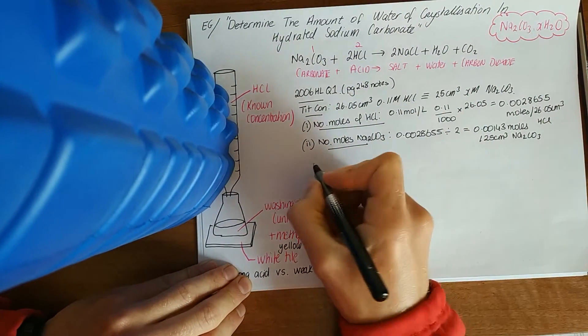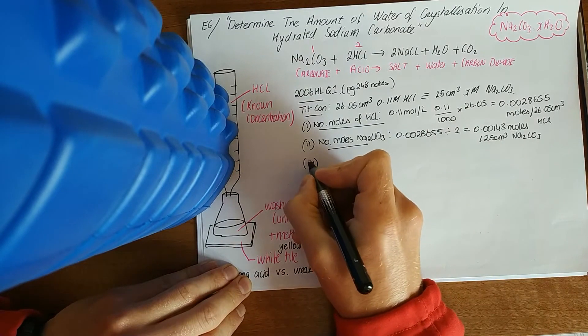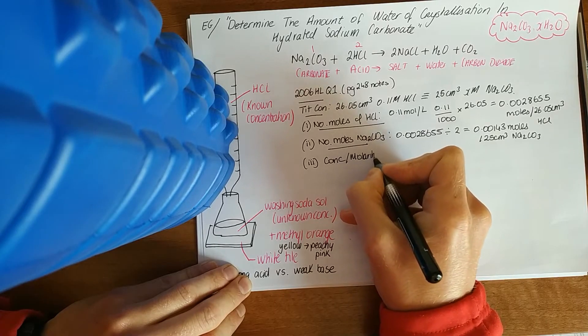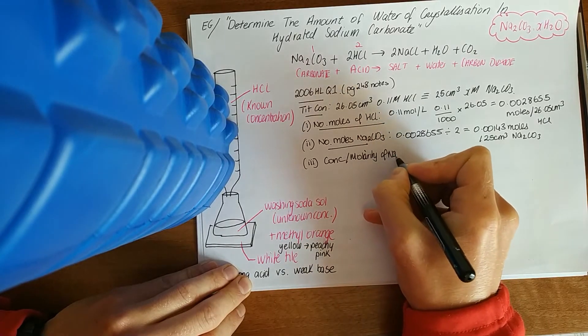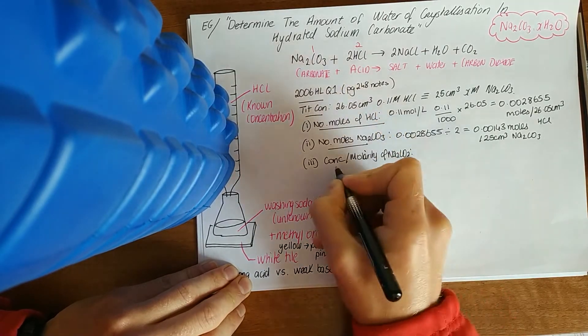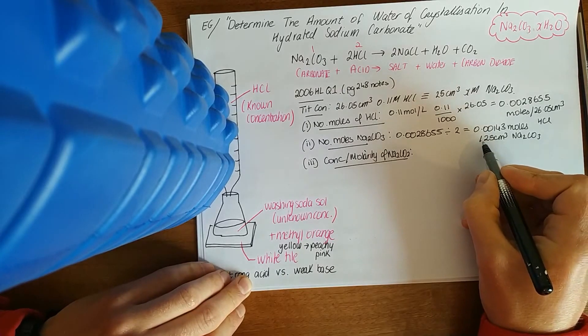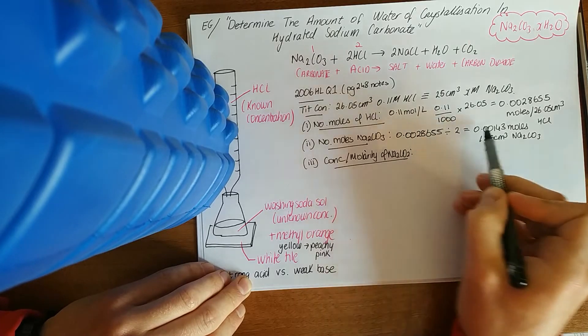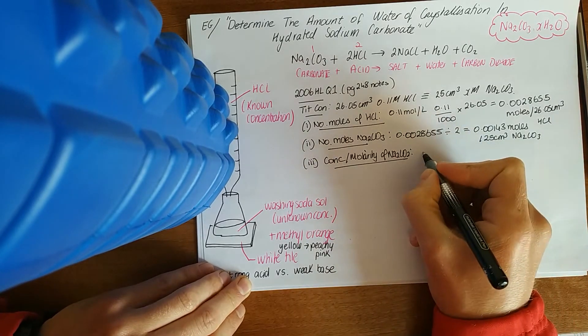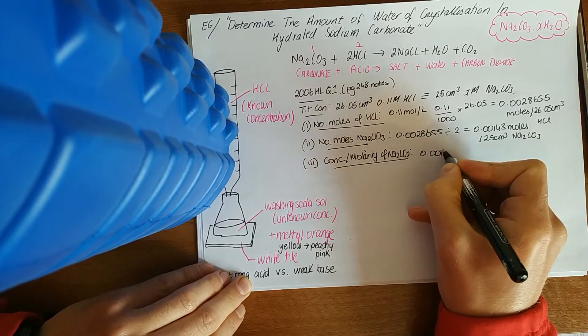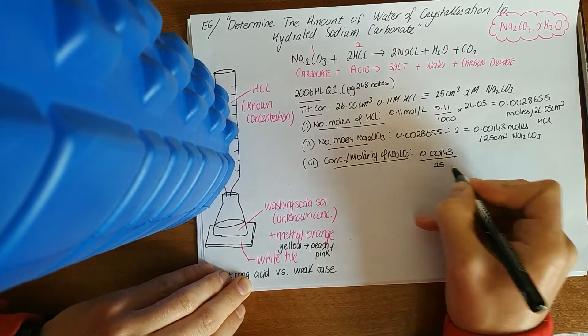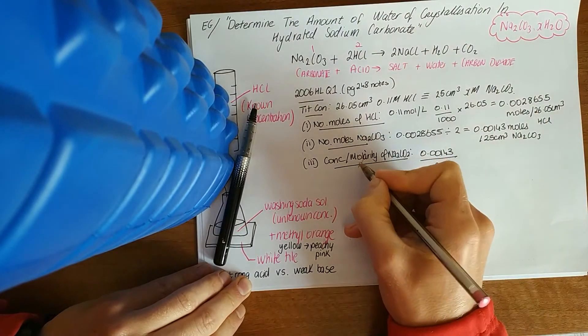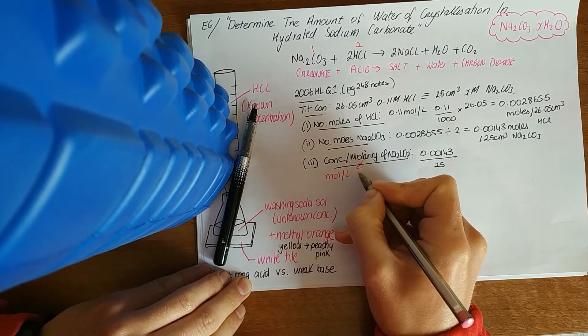This is the crucial bit, in 25 centimeters cubed. We've got the number of moles per 25 centimeters cubed. The next thing they'll ask you for is the concentration or the molarity of Na2CO3. How did we say 0.11 moles in a litre? We put it over. So how did we say in 25? We put it over again. Molarity means moles per litre, the big M.